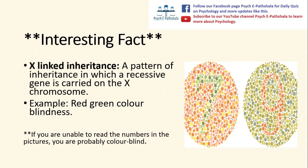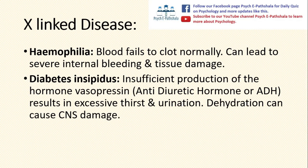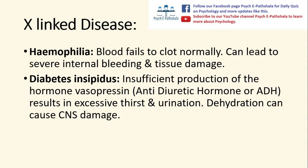The disorders previously discussed are mostly on the autosomes, but some disorders are linked to the sex chromosomes. An X-linked inheritance disorder is red-green colorblindness, a pattern of inheritance in which a recessive gene is carried on the X chromosome. If you are unable to read the numbers in the picture on the screen, you are probably colorblind. Other X-linked diseases include haemophilia, where the blood fails to clot normally, leading to severe internal bleeding and tissue damage. Another X-linked disease is diabetes insipidus, involving insufficient production of the hormone vasopressin (antidiuretic hormone or ADH), which results in excessive thirst and water loss through urine. Dehydration can also cause CNS damage, as the kidneys are unable to retain water.